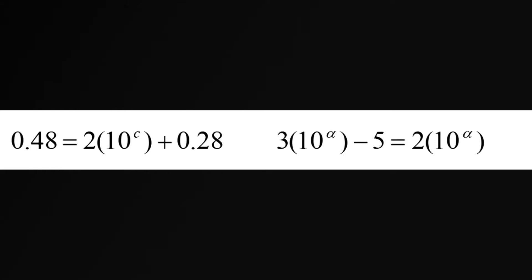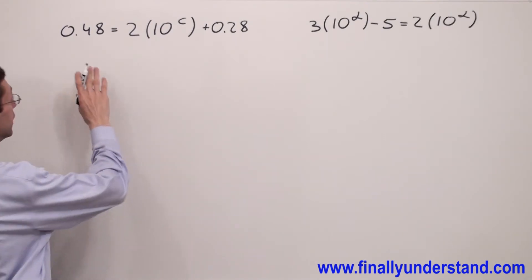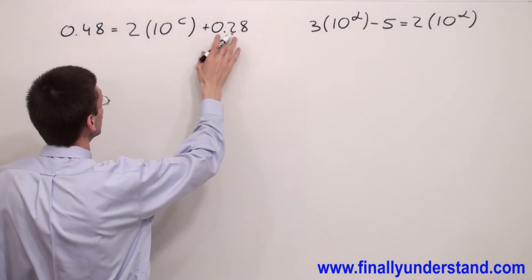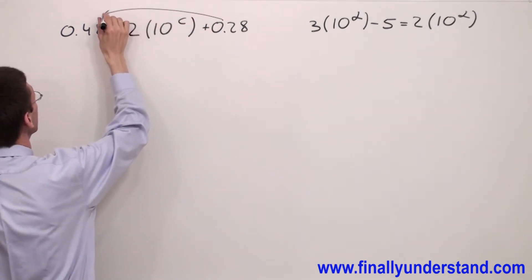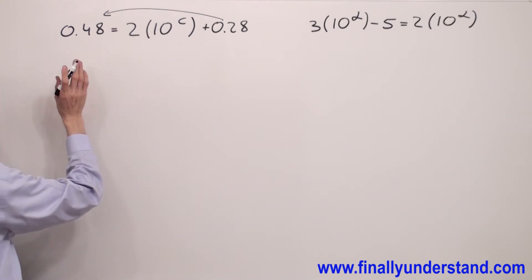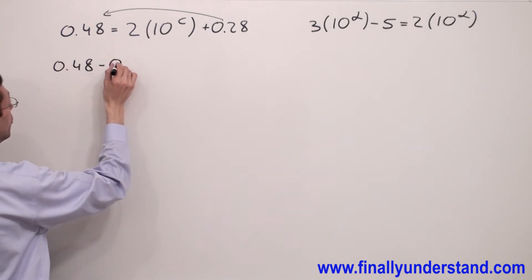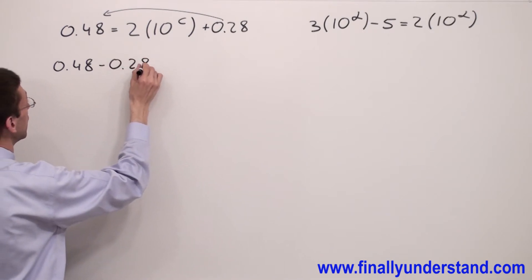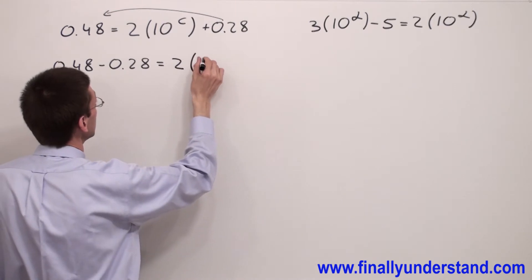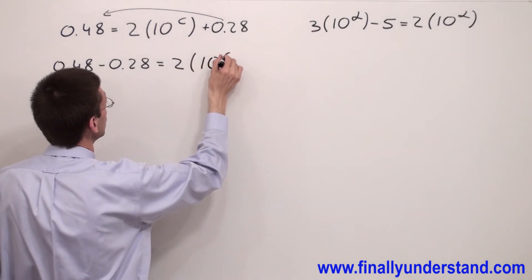We have another example. First we have to organize the equation. I'm going to move 0.28 to the left side because this is the decimal number, and I have 0.48 minus 0.28 equals to 2 times 10 to the C power.